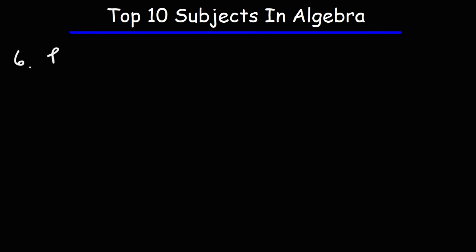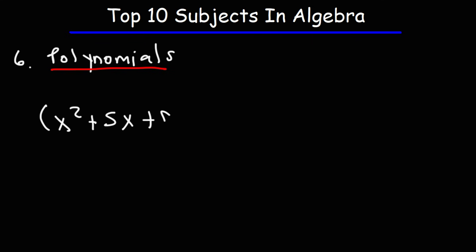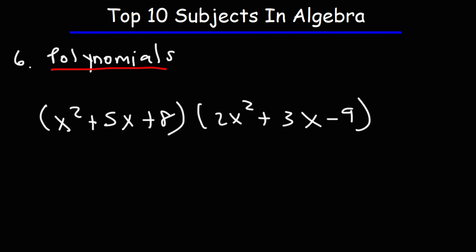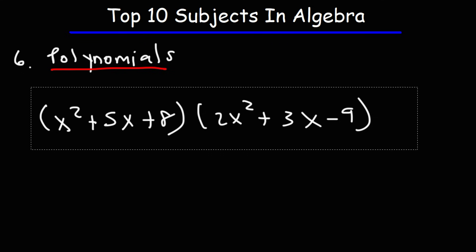The next topic has to do with polynomials — adding, subtracting, multiplying, dividing, and graphing them. For example, multiplying two trinomials: x squared plus 5x plus 8, multiplied by 2x squared plus 3x minus 9. That's an example of what you'll be doing when you go over that topic.